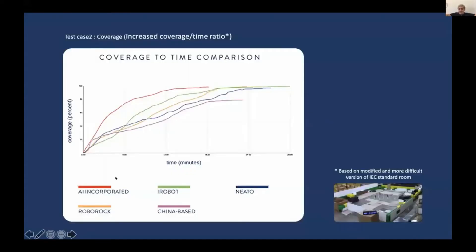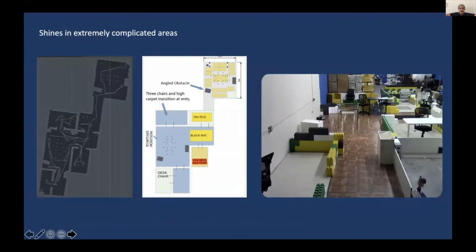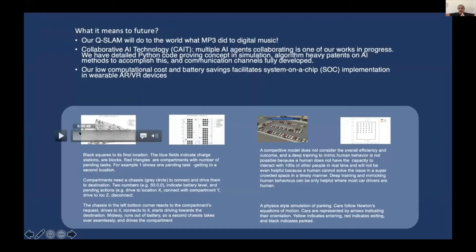For a coverage application, we used commercial robots to demonstrate coverage, which is another application for path planning. For path planning, you have three use cases: coverage, point-to-point, and patrolling — going to every room or environment, scanning and checking for devices or for security reasons. We beat every commercial robot that is out there for coverage as well, and this is our layout.